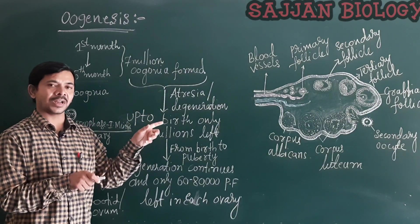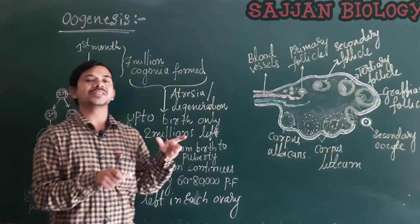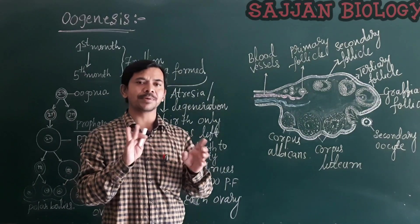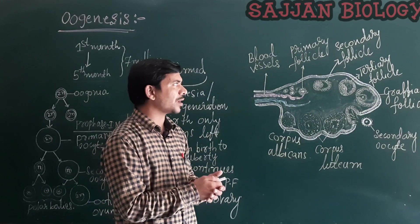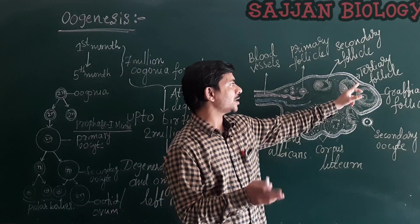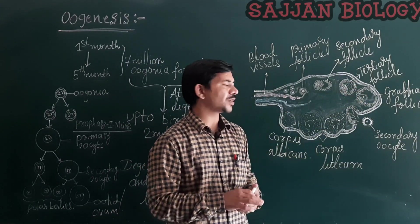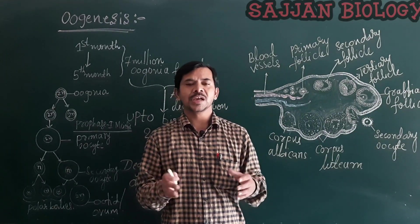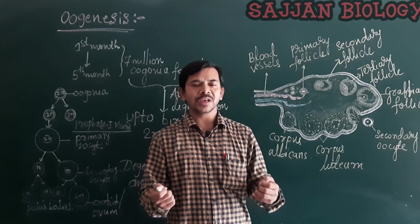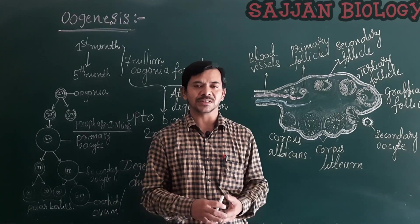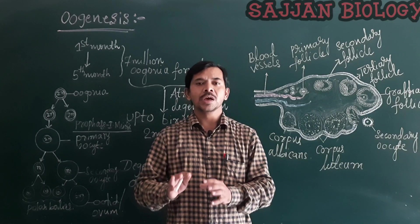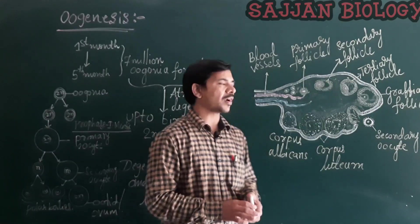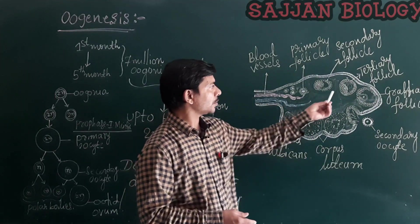The primary follicle stage is where the primary oocyte is arrested at prophase one of meiosis. This arrest is temporary. Meiosis one is completed at the tertiary follicle stage. The primary oocyte grows in size and undergoes unequal meiotic division, producing a large secondary oocyte and a small first polar body.